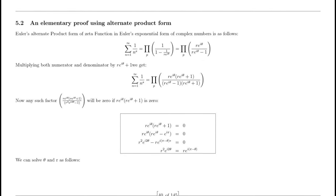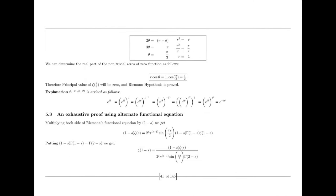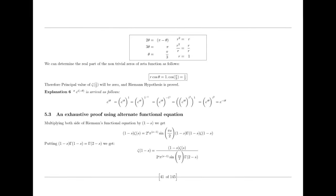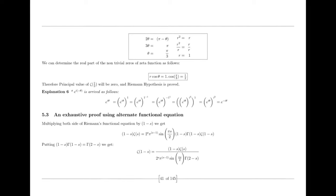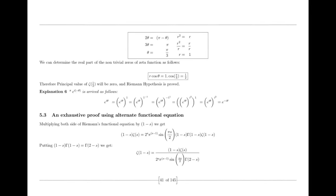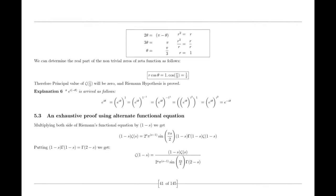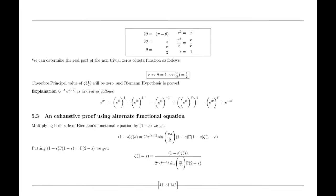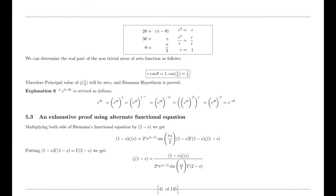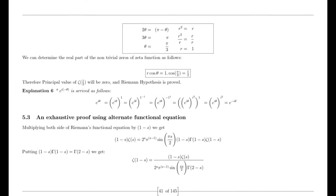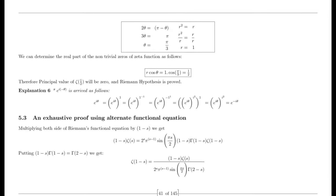The integration of imaginary numbers with the real number line would have practical implications for numerous technological applications. Complex numbers are crucial in electrical engineering, signal processing, control systems, and telecommunications. By extending the real number line, it would provide a more comprehensive mathematical framework for analyzing AC circuits. Complex numbers would continue to play a crucial role in representing voltage and current phasors accurately. It would enable engineers to perform complex calculations involving impedance, reactance, and power factor more efficiently.